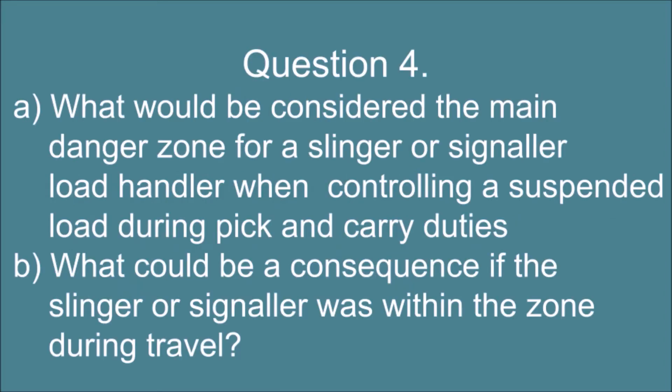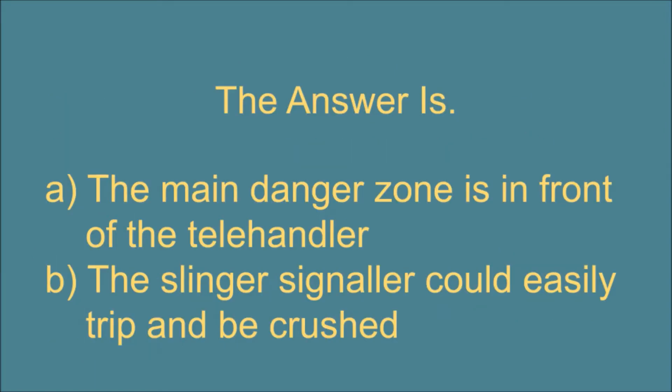Question 4. A. What would be considered the main danger zone for a slinger, or signaller load handler when controlling a suspended load during pick and carry duties, and B. What could be a consequence if the slinger or signaller was within the zone during travel? The answer is: A. The main danger zone is in front of the telehandler. B. The slinger or signaller could easily trip and be crushed.